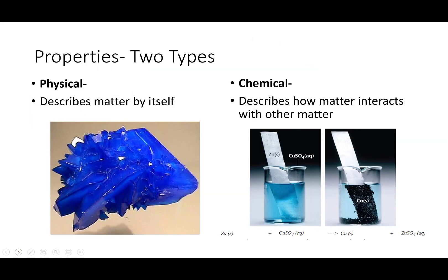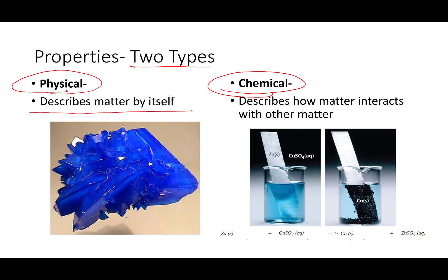In chemistry we're very specific. We have two types of properties: physical properties and chemical properties, and these definitions are very unique and specific. A physical property describes the matter all by itself when it is sitting alone. A chemical property describes how it is going to interact with other matter.